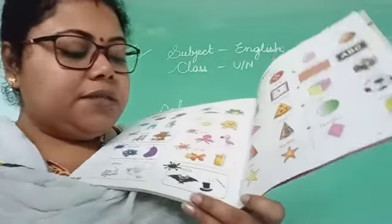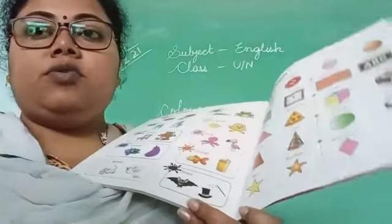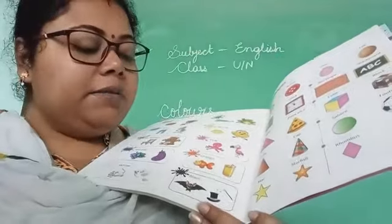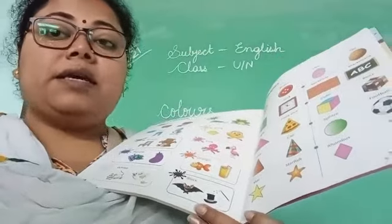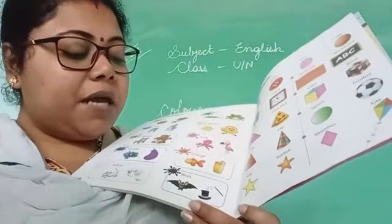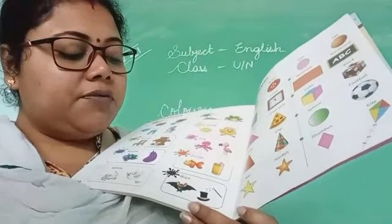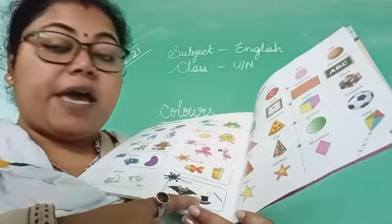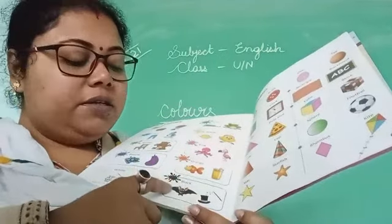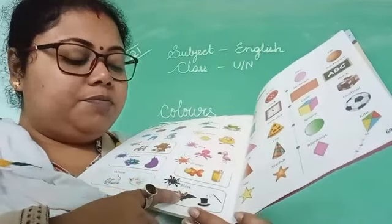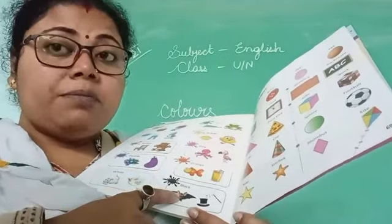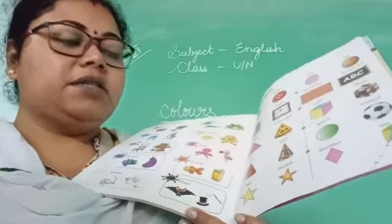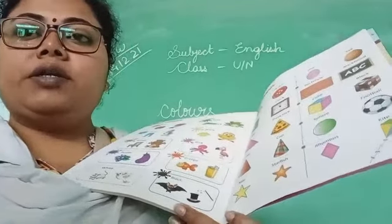Next, this one is black. B-L-A-C-K — black. Black color — what is given? Bat. And this one is a hat. Black color bat and black color hat.